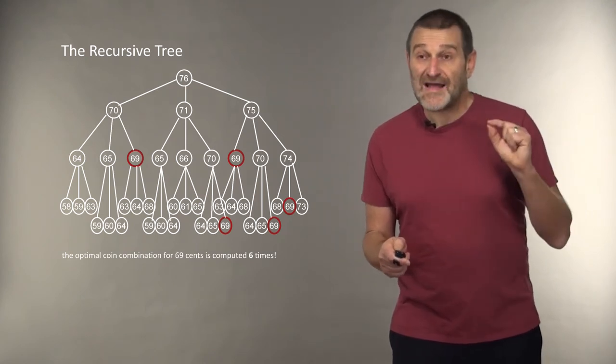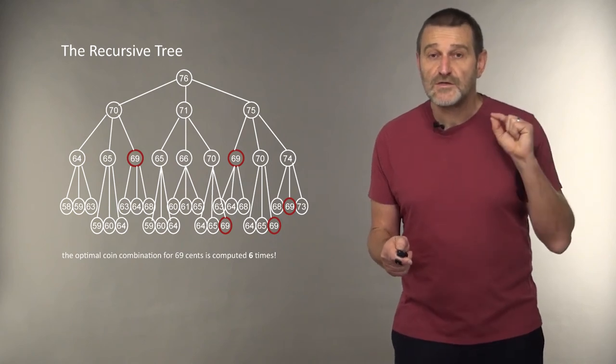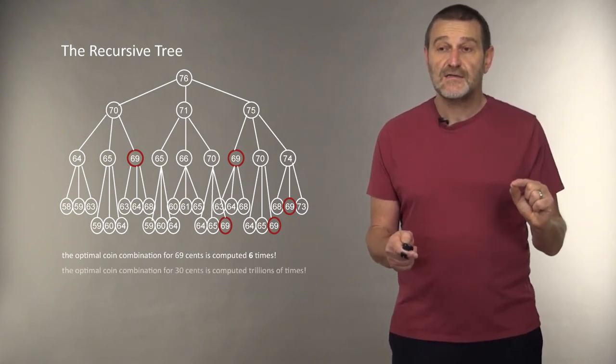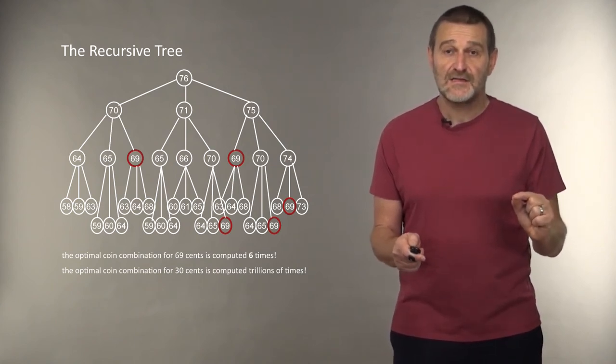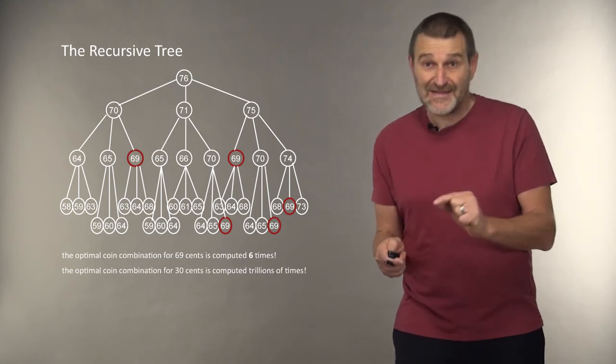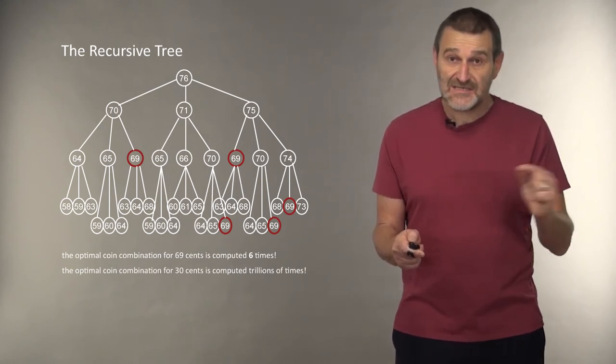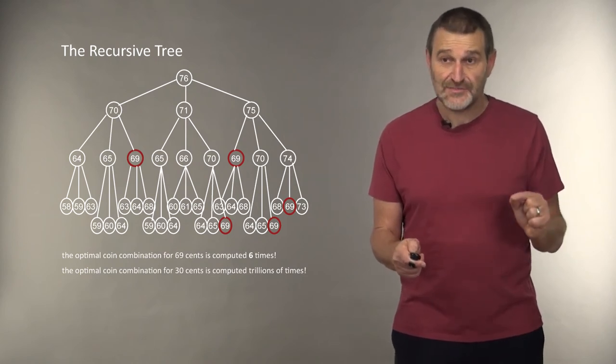But how many times do we need to compute the optimal combination for $0.30? It turns out that we need to compute it trillions of times, which means that our algorithm is correct, but it will never end because it takes so much time. We need to come up with a different approach.